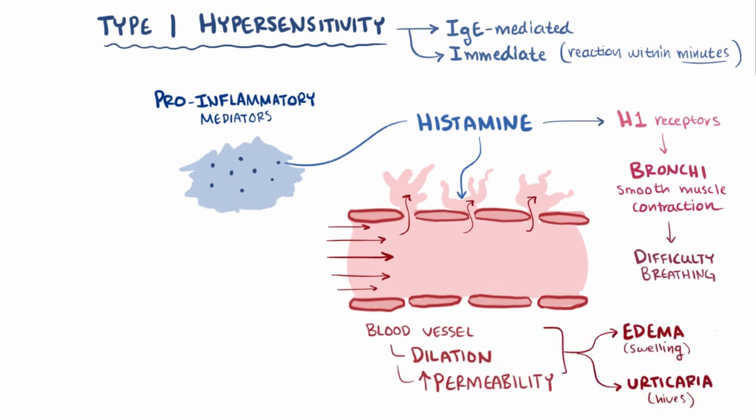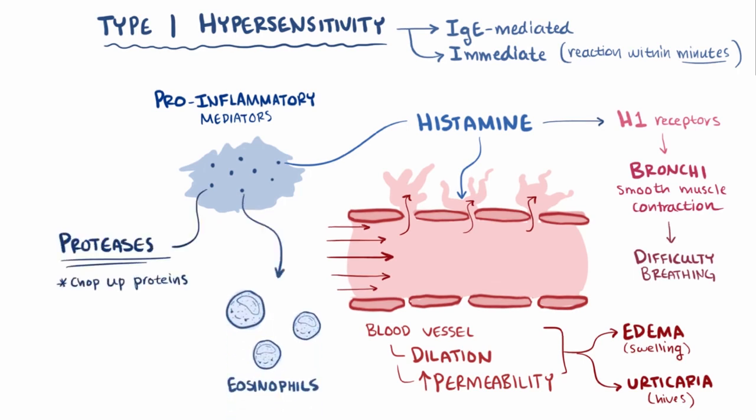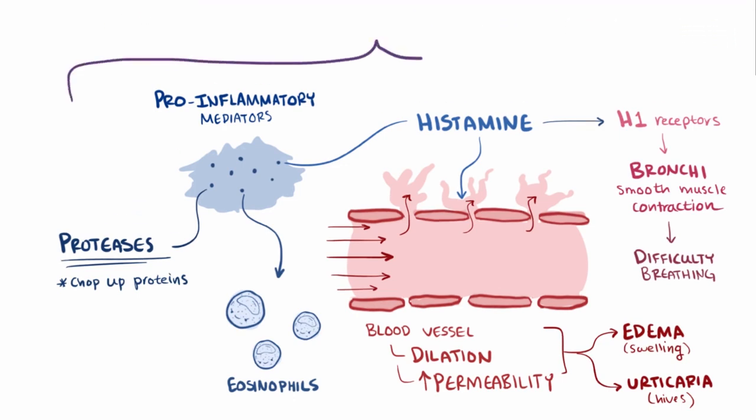In addition to histamine, mast cells release other pro-inflammatory mediators, including some that activate eosinophils and proteases, which chop up large proteins into small peptides. The effects of these molecules are called early phase reactions, and they happen within minutes of the second exposure.